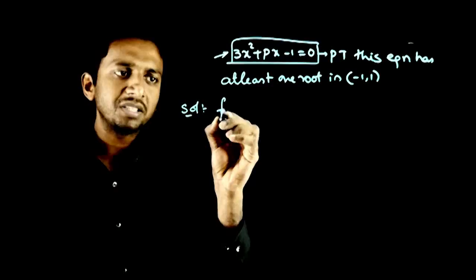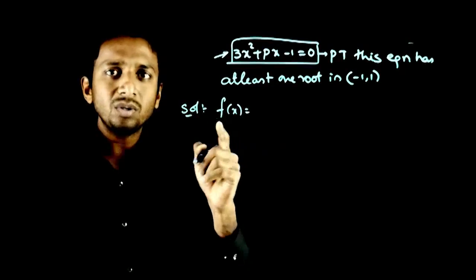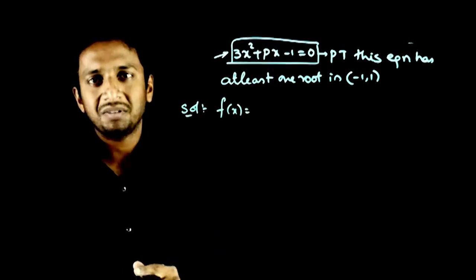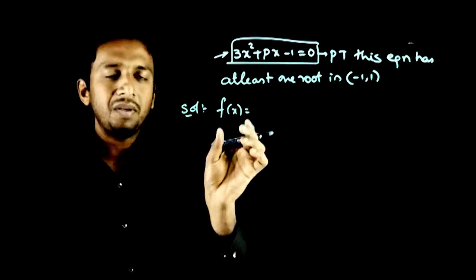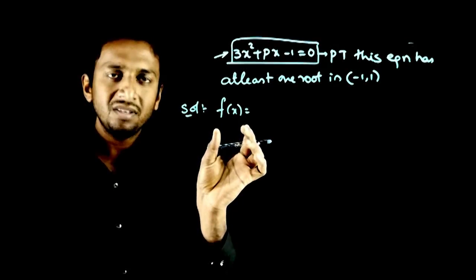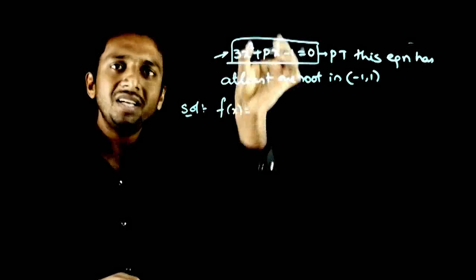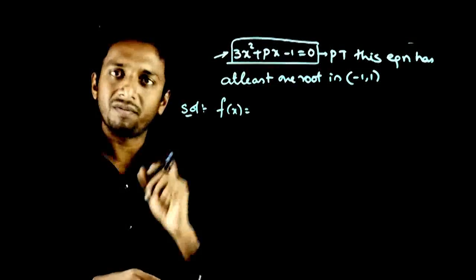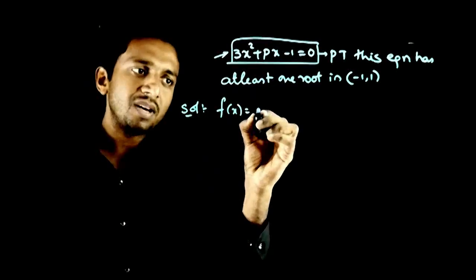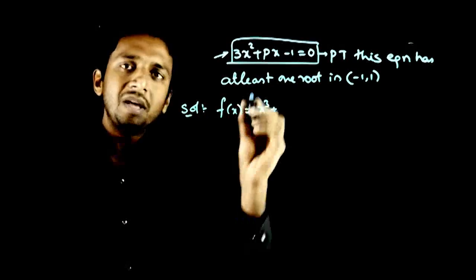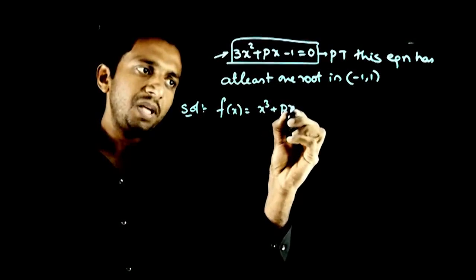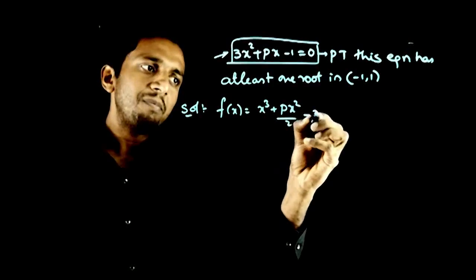What we need to do is assume a function f(x) whose differentiation is the given equation. We have to assume a function whose differentiation is the given equation, which is the integration of the equation. So for 3x², x³; for px, px²/2; minus x.